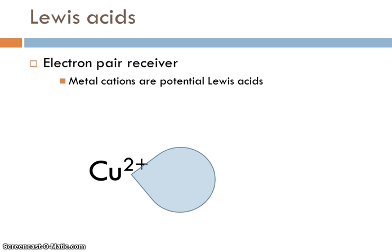So let's talk about them briefly. A Lewis acid is defined as a species that is an electron pair acceptor or can receive an electron pair. Metal cations, such as the copper 2 ion shown here, they're all potential Lewis acids. They have an empty orbital. They have a place for these electron pairs to come in.